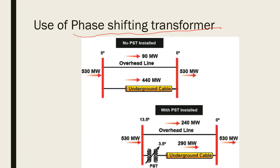Here we can see a double transmission line transmitting power of 530 megawatt to some part of the power system. One line is carrying 90 megawatt through an overhead line, and the second one is carrying 440 megawatt through an underground cable. This power flow difference happens because of the reactance present in the line. The overhead line has higher reactance, and the underground cable has less reactance, which is why more power flows through the underground cable.